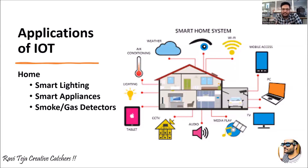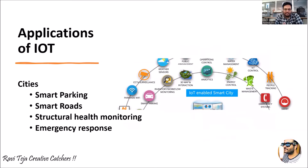All these can be considered smart home systems where we can monitor weather, air conditioning, lighting, and CCTV surveillance in the home. We can also control a music system's audio, watch content on a smart TV connected to the internet, and use mobile phones and PCs — all falling under smart home systems, which are a part of IoT applications.